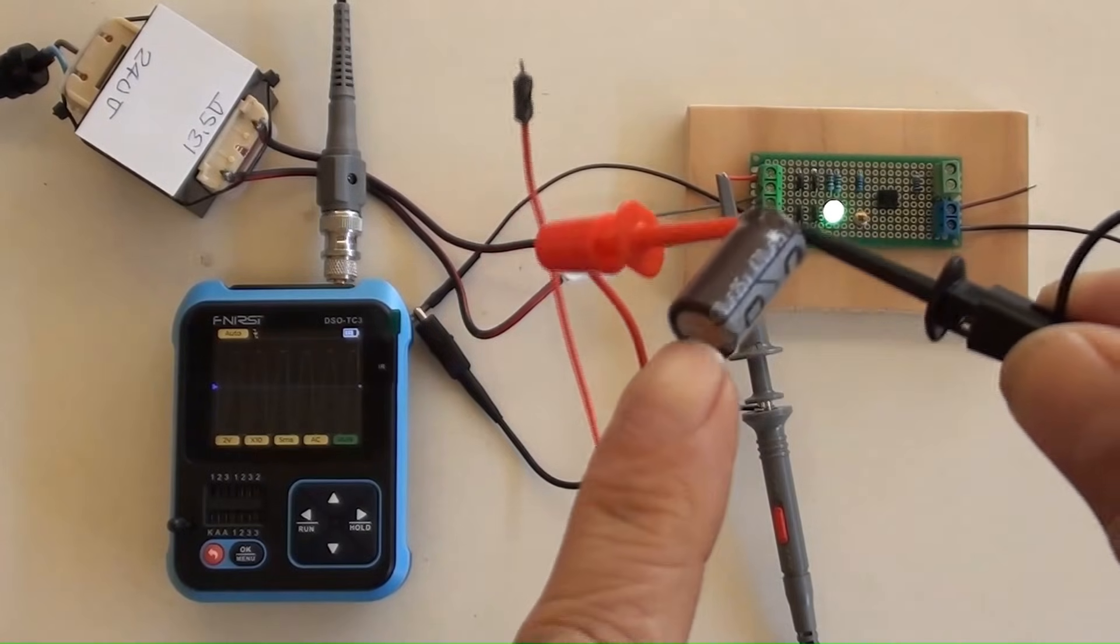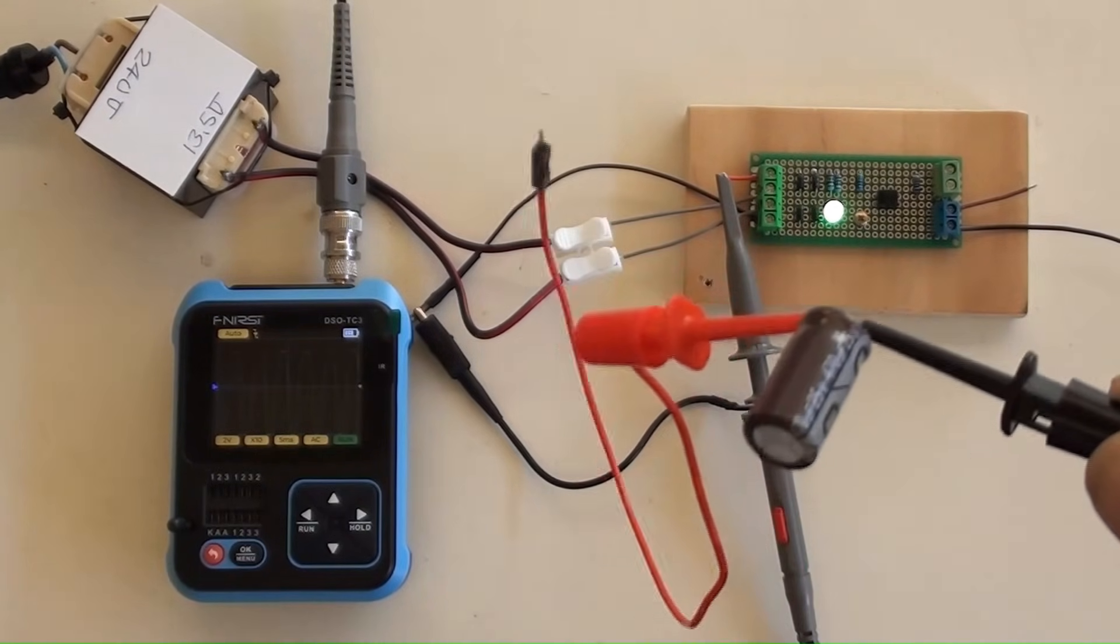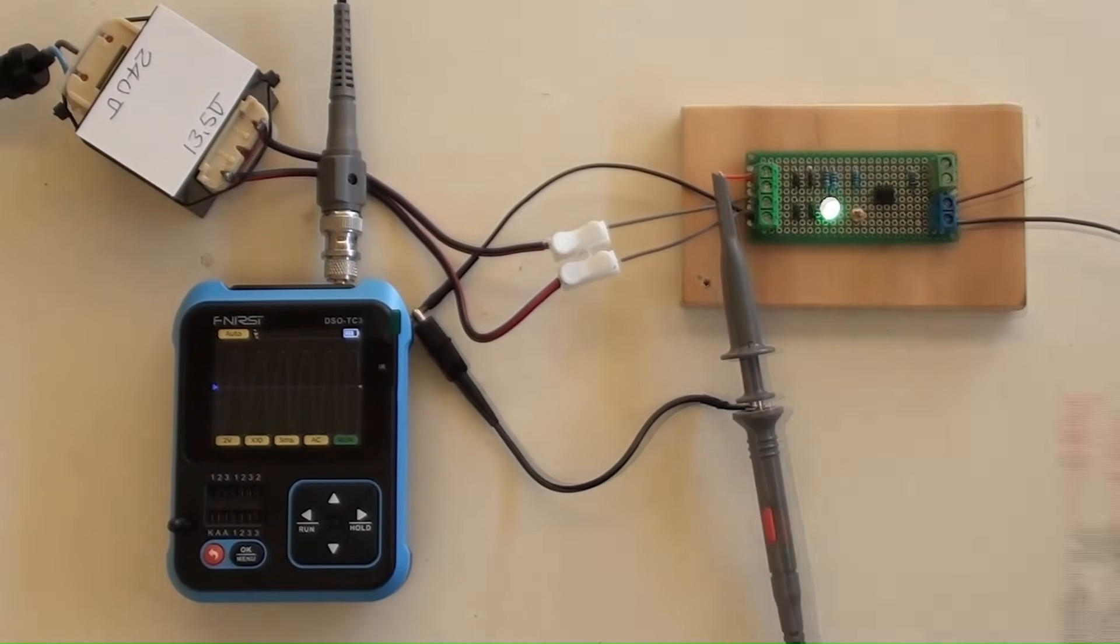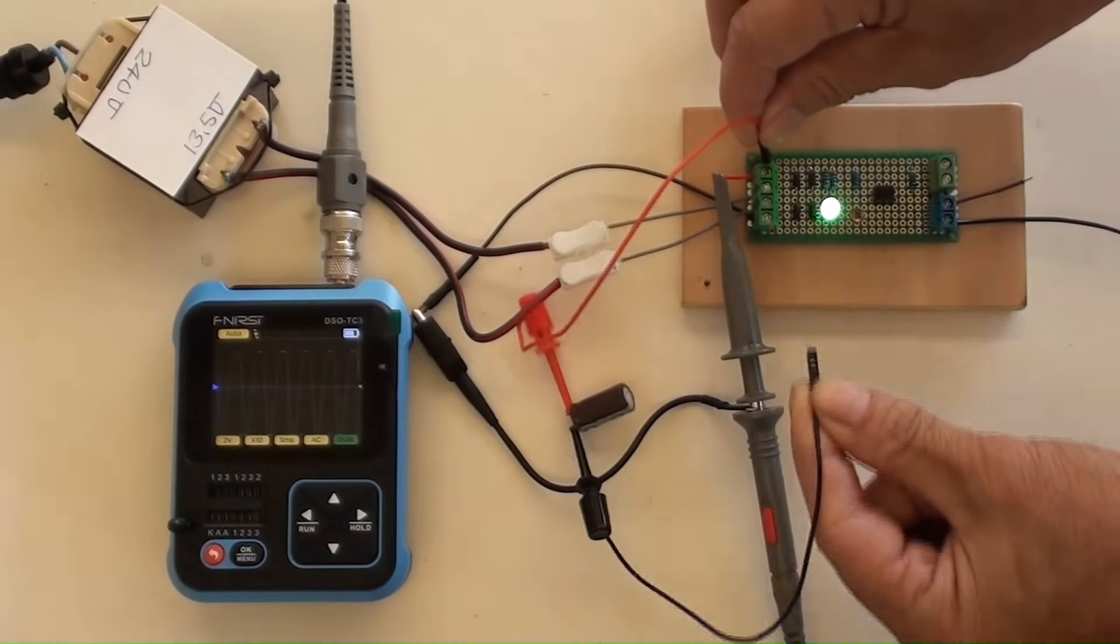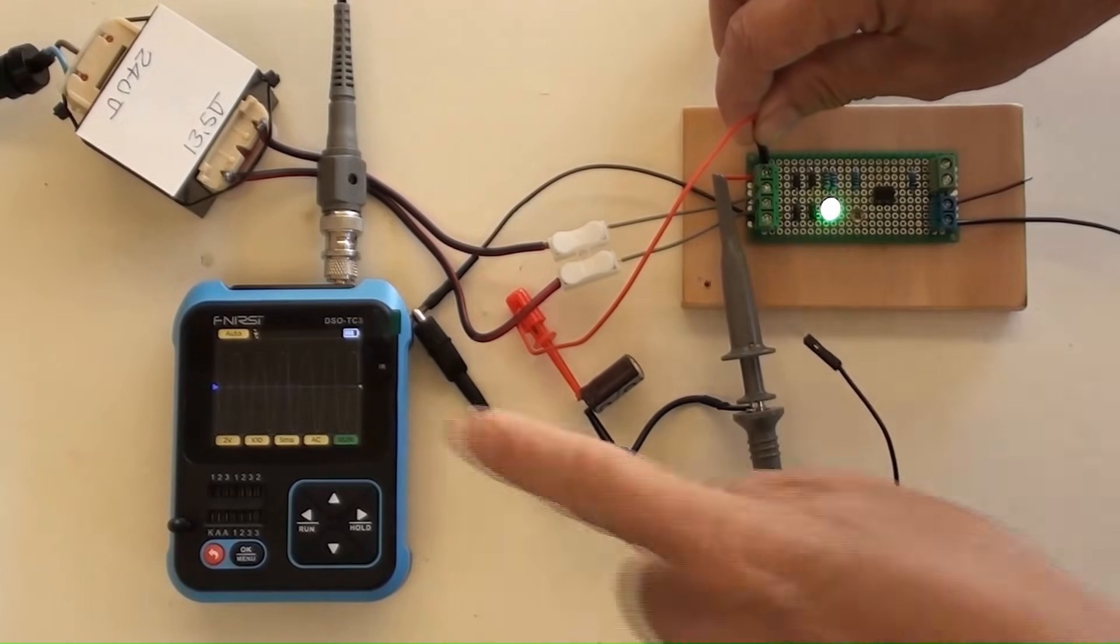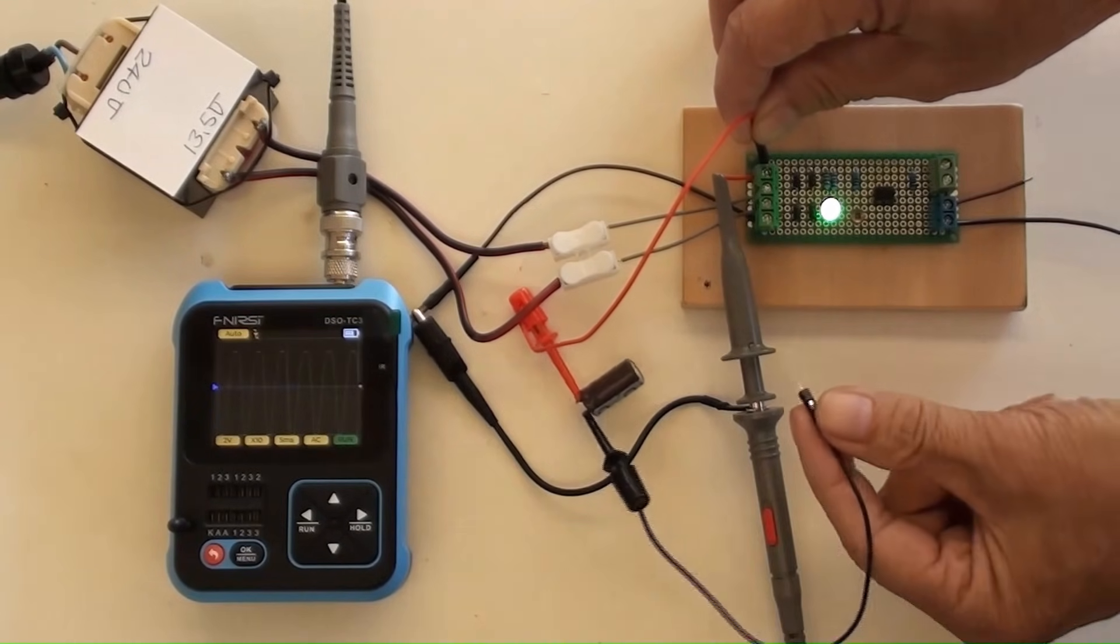This is a capacitor with its values of 470μF and 25V. To see the waveform changed after connecting it to the circuit. The waveform becomes almost a straight line when connected to the points which the mini oscilloscope did.